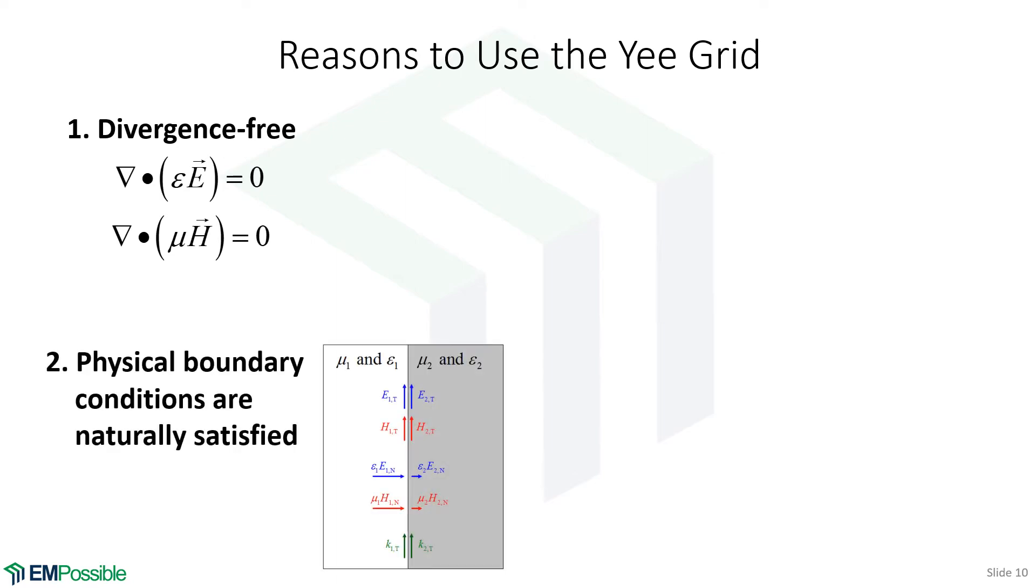The second reason: physical boundary conditions are naturally satisfied. We don't have to go in and build in extra lines of code where there's material interfaces and do a lot of if-then stuff. We can just go one point at a time, enforce Maxwell's equations, and it's all handled automatically by the math of Maxwell's equations.